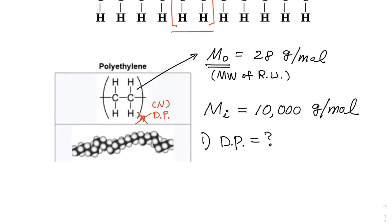So, all you got to do is DP value here is 10,000 grams per mole, and each repeating unit weighs 28 grams per mole. So, therefore, this one is about 358 degree of polymerization. So, that's the number of repeating units. So, DP of 358 repeating units.